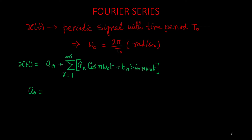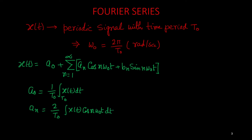We can compute a0 as (1/T0) times the area under the curve x(t) for one time period T0. Similarly, we can consider an, the cosine term coefficient, computed as (2/T0) times the integral of x(t)·cos(nω0t) over one time period. And bn, the sine function coefficient, is (2/T0) times the integral of x(t)·sin(nω0t) dt over one time period.